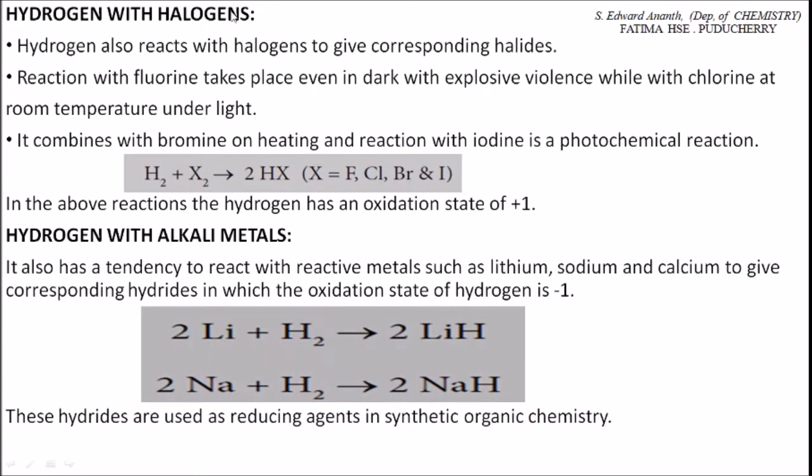Hydrogen with halogens: Hydrogen also reacts with halogens to give corresponding halides. When X represents the halogens—fluorine, chlorine, bromine, and iodine—hydrogen combines with fluorine to form hydrogen fluoride, with chlorine to form hydrogen chloride HCl, with bromine to form hydrogen bromide HBr, and with iodine to form hydrogen iodide HI.